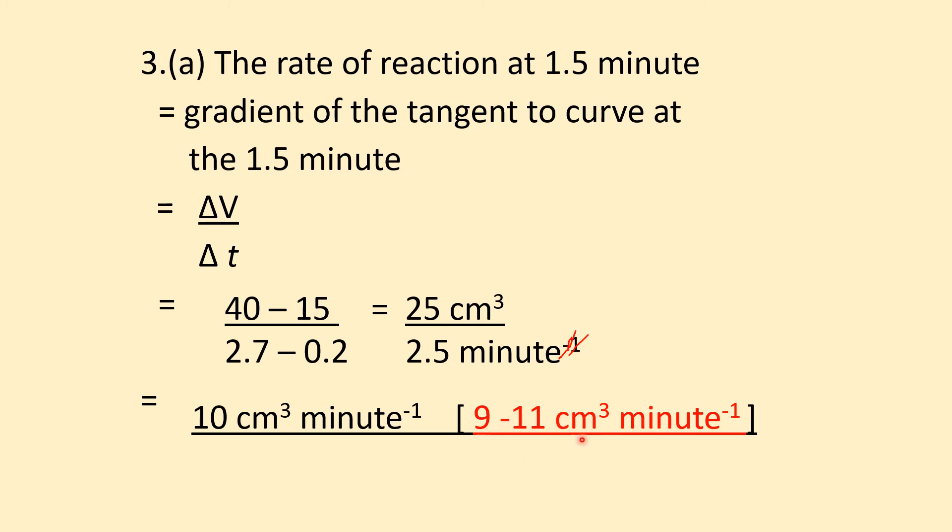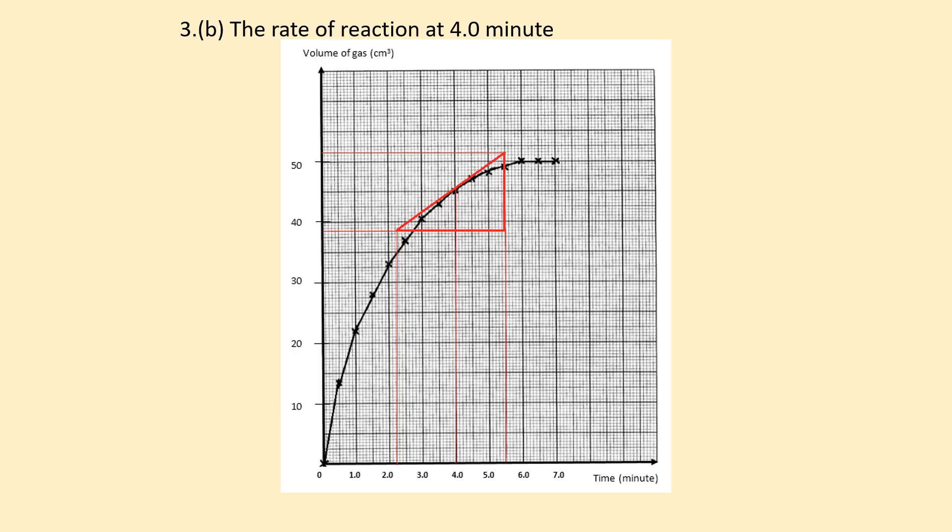For part 3b, rate of reaction at 4 minutes: use the same method - draw a tangent at 4 minutes. Read the change in y (y2 - y1) and the change in x (x2 - x1), then divide y by x.